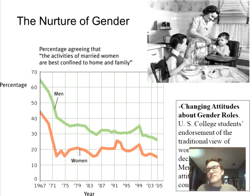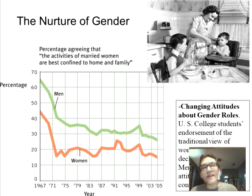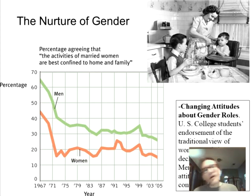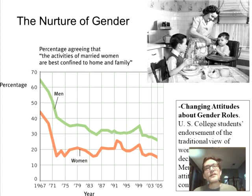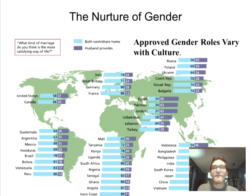Gender roles have been changing. When people were asked starting in 1967 whether married women's activities are best confined to home and family, there was a big drop off in agreement for both genders — that was the women's liberation movement. Since then it's remained fairly consistent, with men slightly agreeing more than women, showing there's still a conservative underlay in our society.